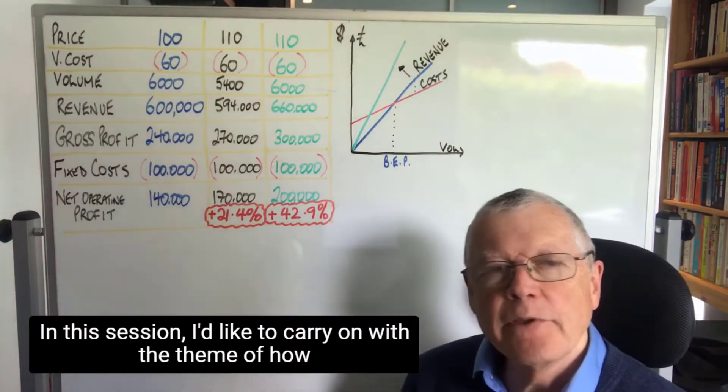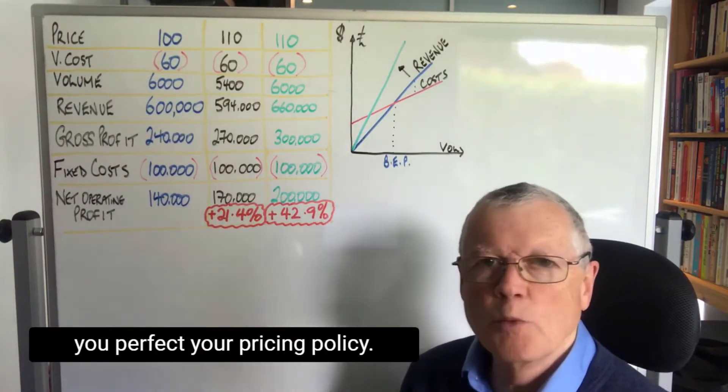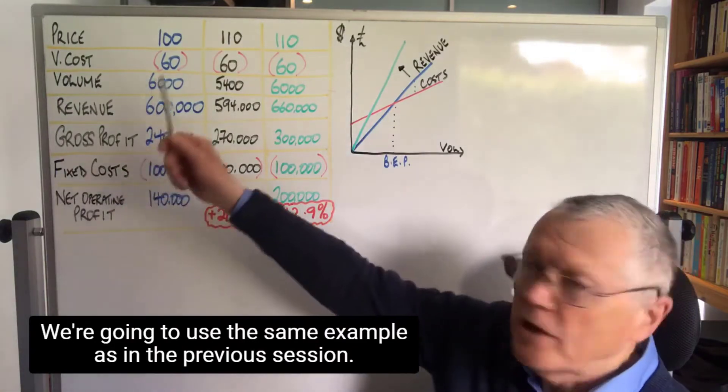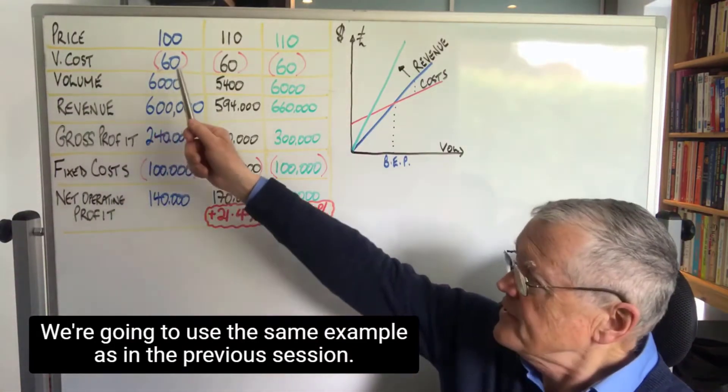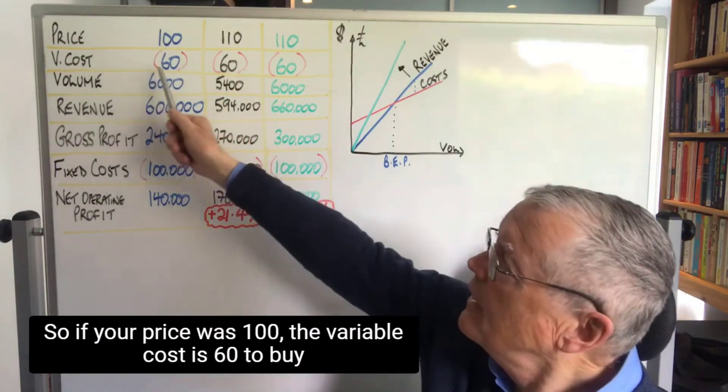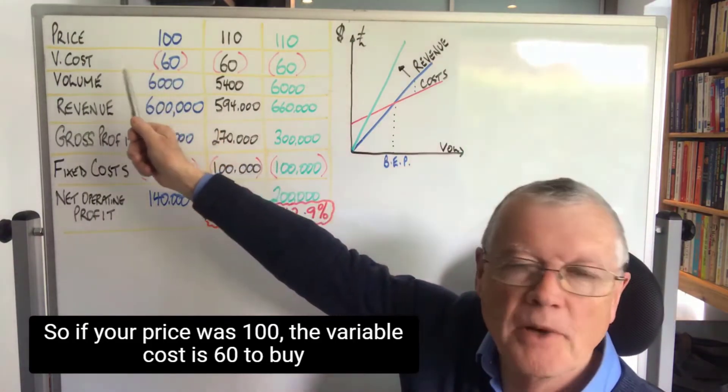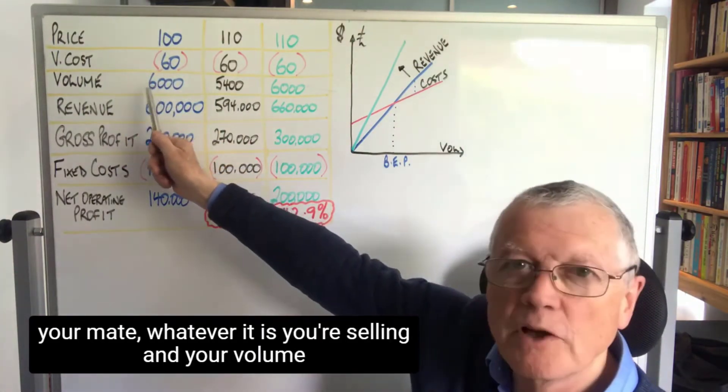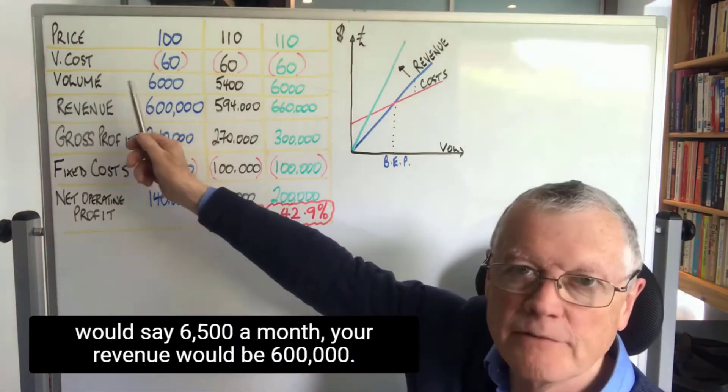Hello, in this session I'd like to carry on with the theme of how you perfect your pricing policy. We're going to use the same example as in the previous session, so if your price was 100, the variable cost is 60 to buy or make whatever it is you're selling, and your volume was say 6,500 a month.